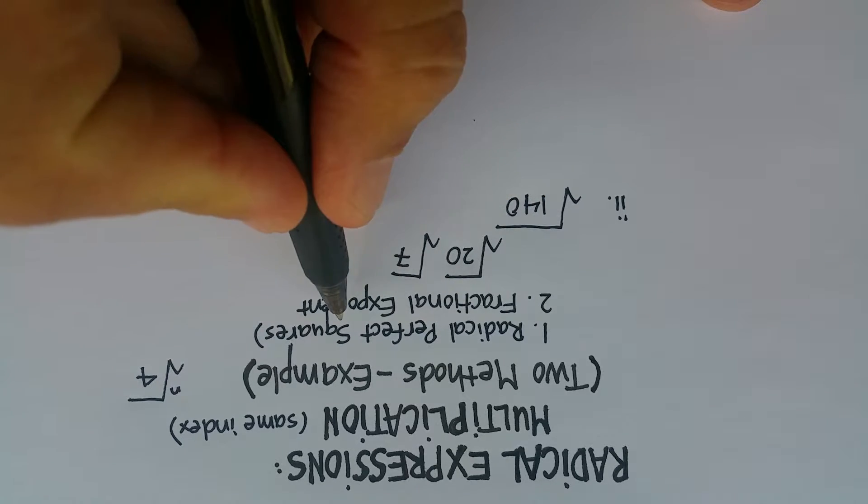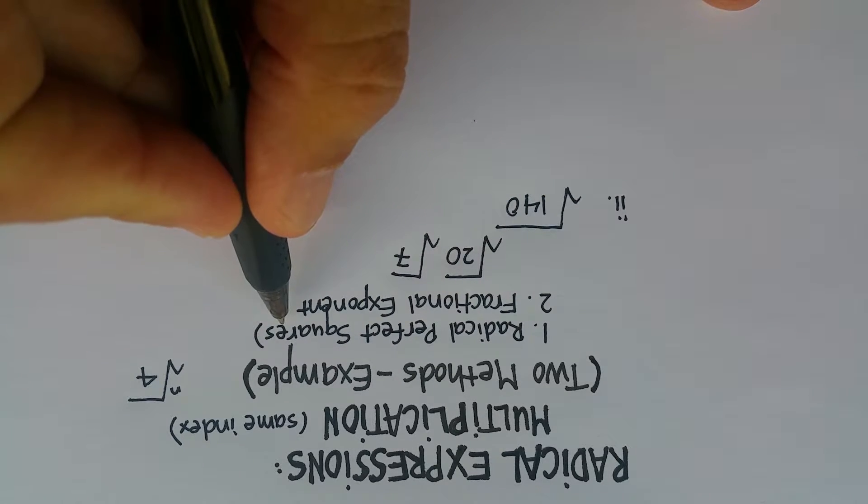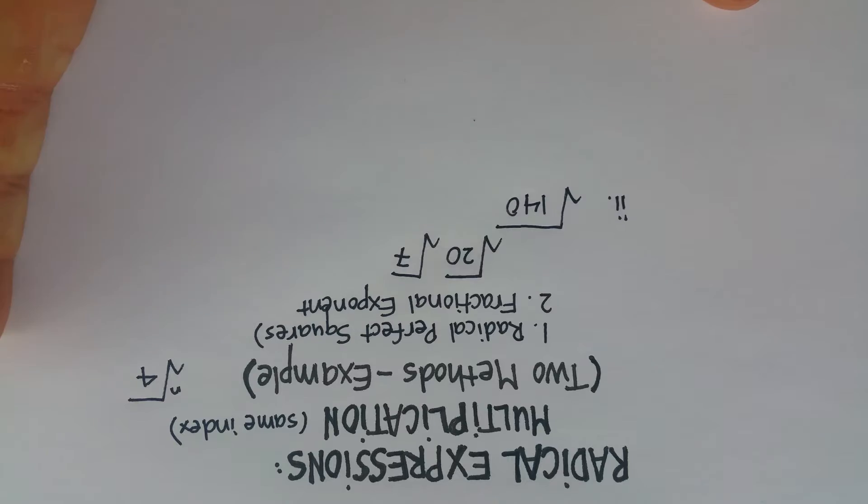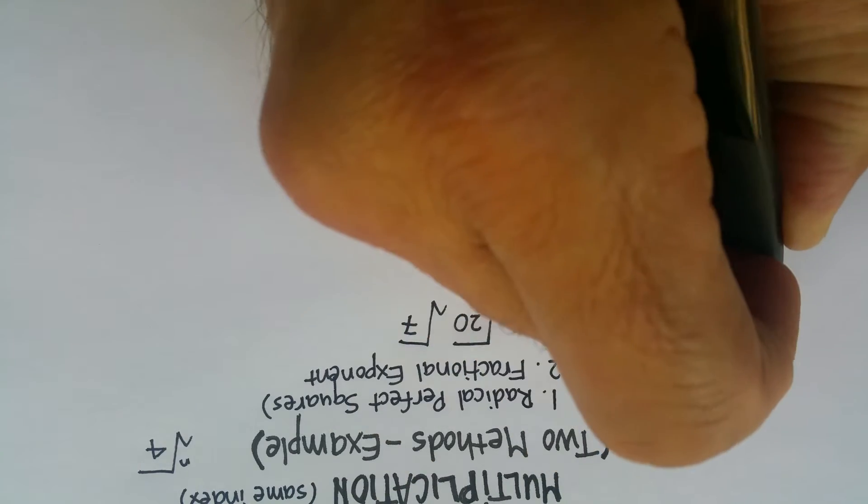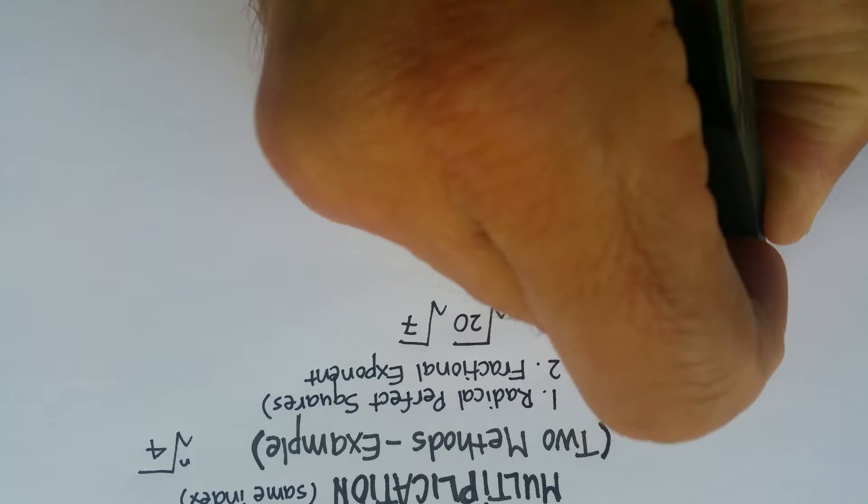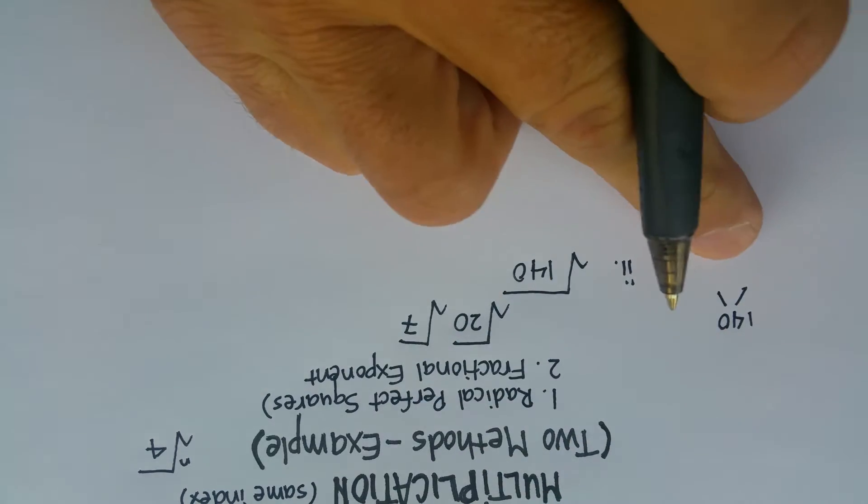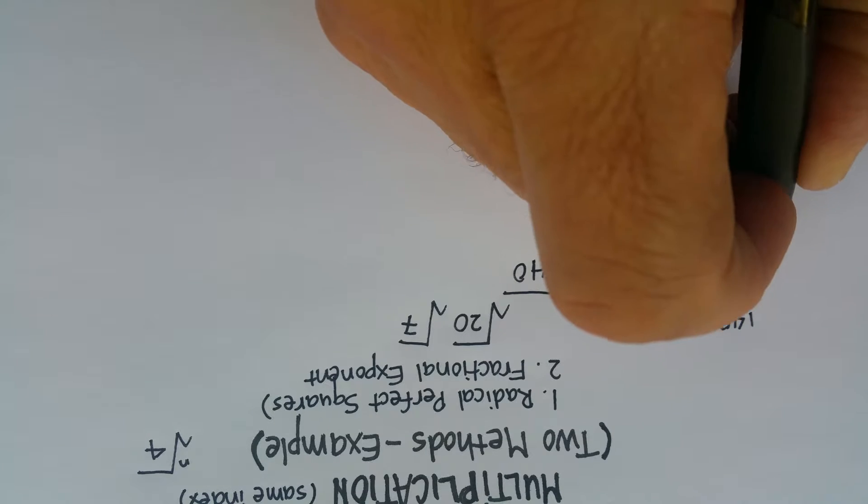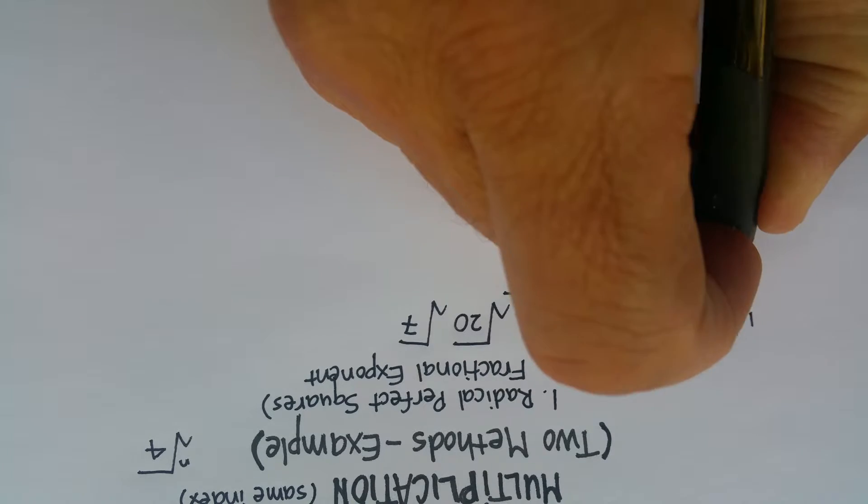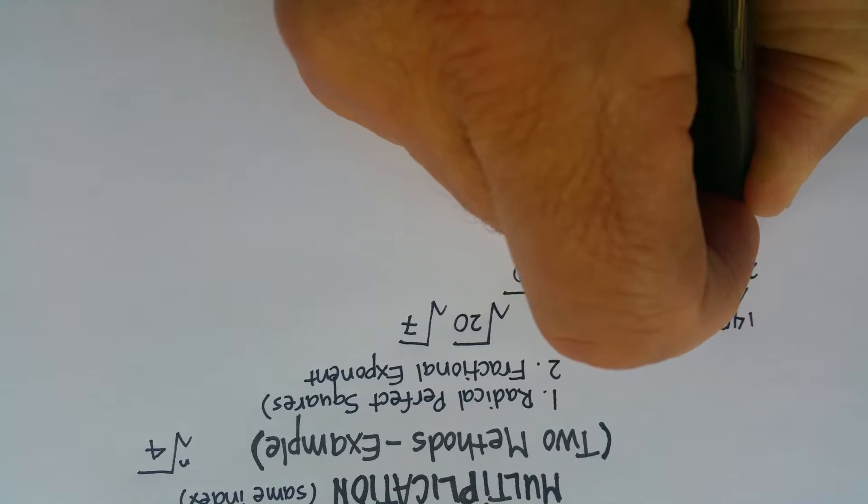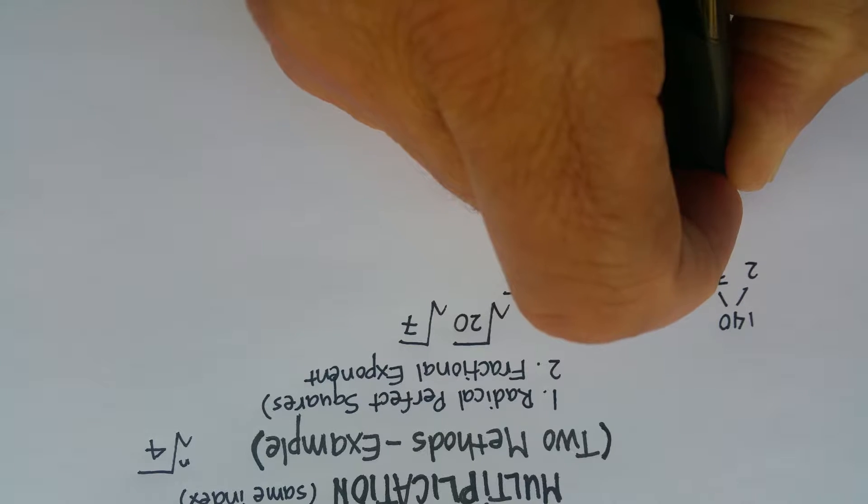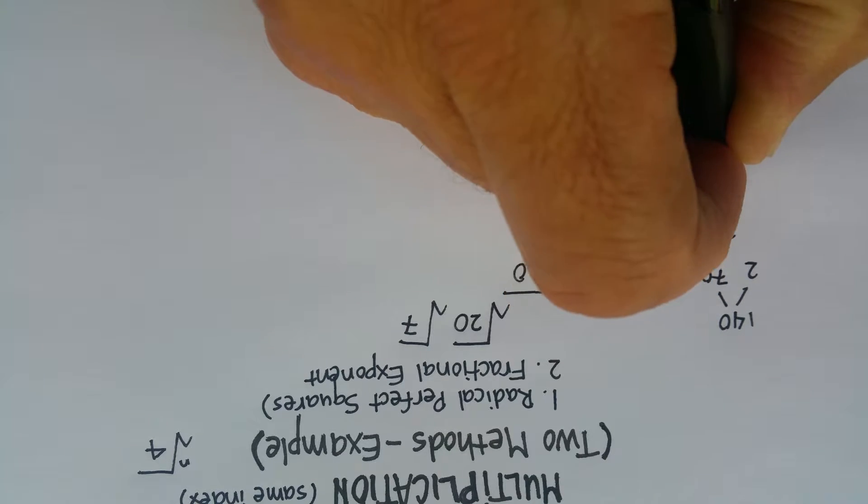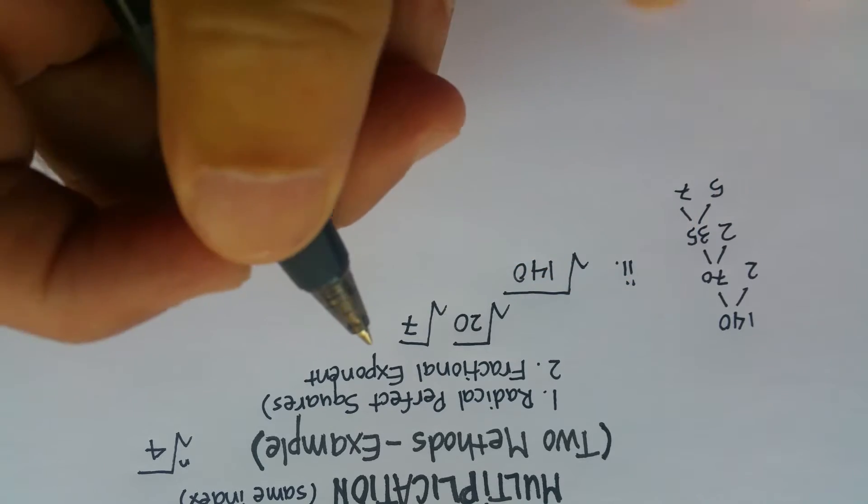Now, the perfect square roots method really illustrates exactly what you're going to try to do. So you're going to take 140, and you're going to try to find the perfect squares inside there. So let's go ahead and break it down into prime factors. That would be 2 and 70, that would be 2 and 35, that would be 5 and 7.